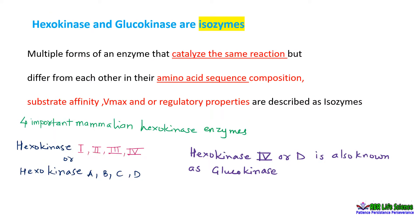Hexokinase and glucokinase are isozymes. Isozymes are multiple forms of an enzyme that catalyze the same reaction but differ from each other in their amino acid sequence composition, substrate affinity, Vmax, and regulatory properties. There are four important mammalian hexokinase enzymes, designated as hexokinase 1, 2, 3, 4 — or hexokinase A, B, C, and hexokinase D.